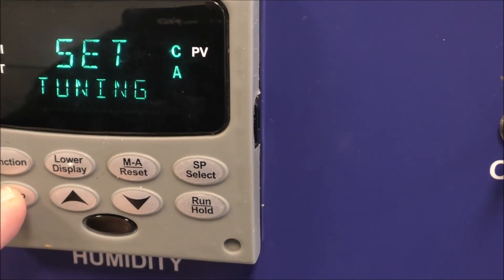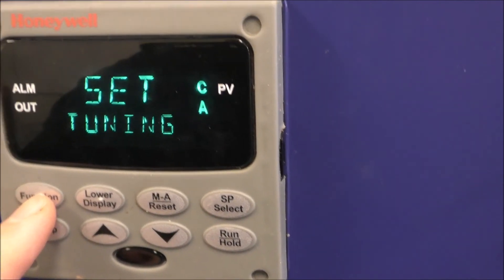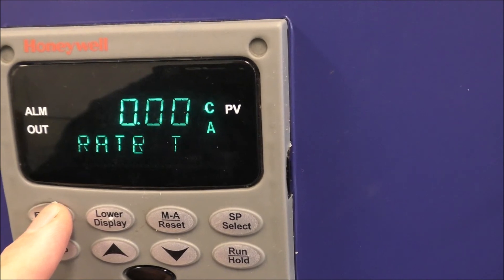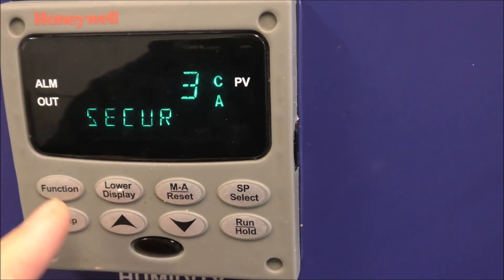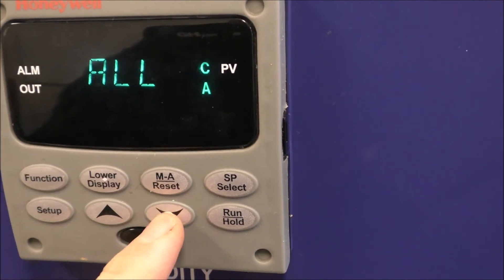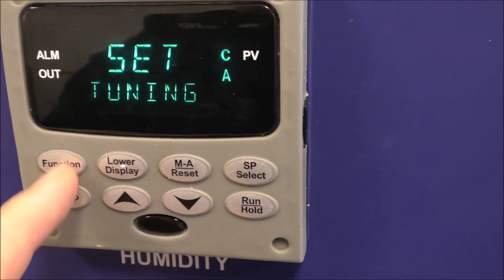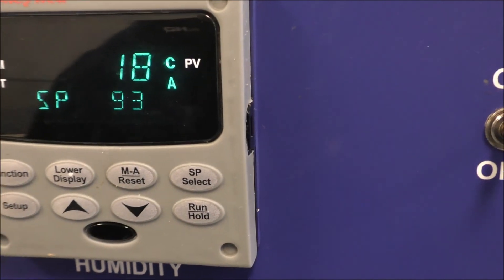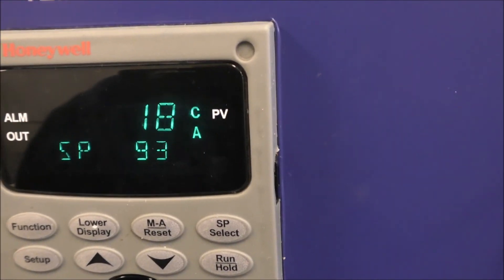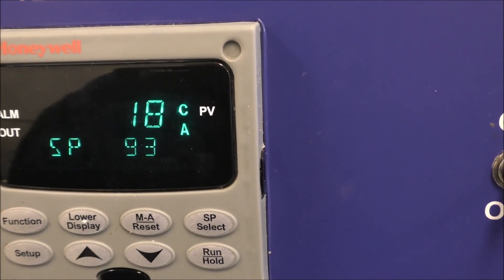Now hit setup again, go back into tuning, go into pushing the function button, go back to security, push the arrow until you hit three, function again, push the down arrow once so it says all, hit function again, and then hit lower display. Once you've done all that, the unit will read and display in Celsius.